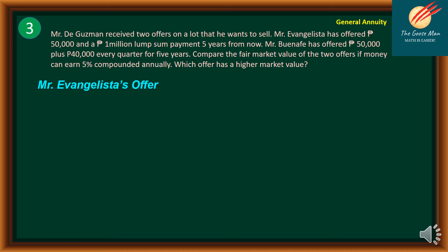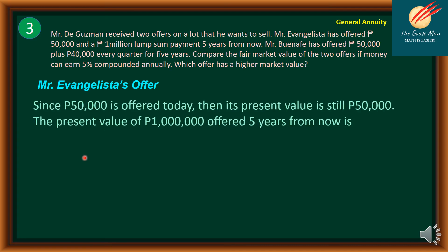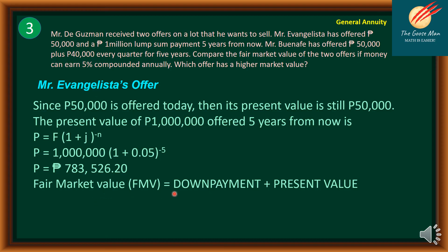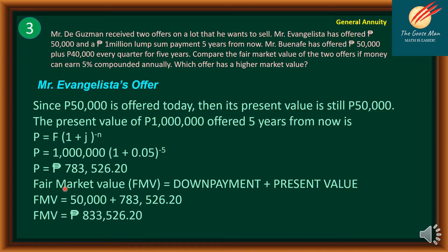For Mr. Evangelista's offer: since 50,000 is offered today, its present value is still 50,000. The present value of 1 million offered five years from now uses the formula P equals F times (1 plus J) raised to negative N, where J equals 5% and N equals 5. Using the calculator, P equals 783,526.20 pesos. The fair market value equals the down payment plus the present value: 50,000 plus 783,526.20, giving a fair market value of 833,526.20 pesos.